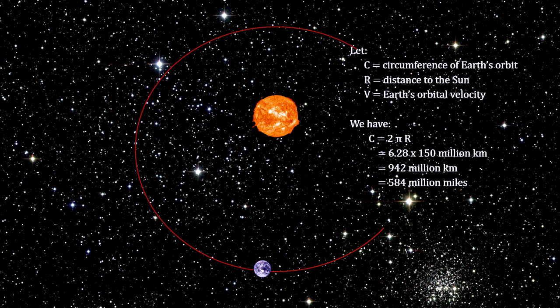The Earth's orbit is very close to circular. So, with the Earth's orbital radius around the Sun being 150 million kilometers, the distance traveled in a year is the circumference of the circle. That's 942 million kilometers, or 584 million miles.